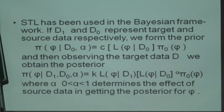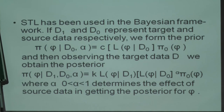Given D0, you get the likelihood of phi (the parameters) given D0, multiplied by another vector pi_0(phi). This way you develop the prior to be applied to the data for D1, the target domain. This type of prior is usually called a pi or empirical prior. Then you observe the target data D1, and observing the target data D1, you obtain the posterior for data in the target domain.